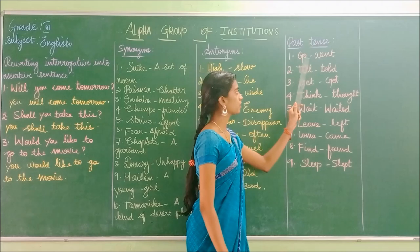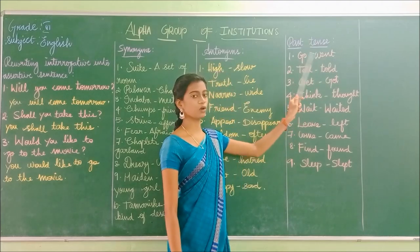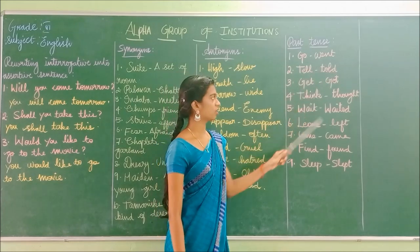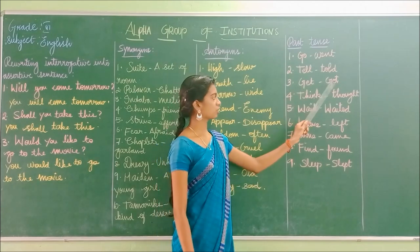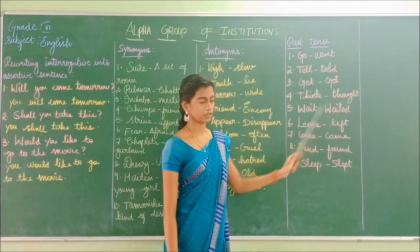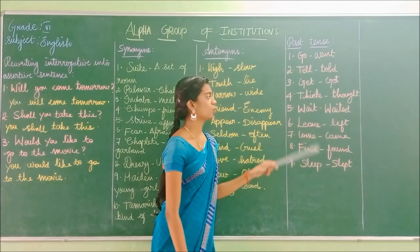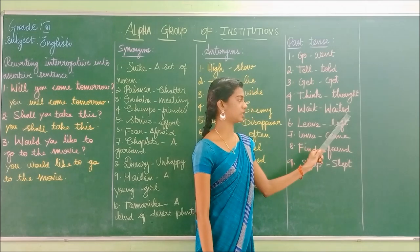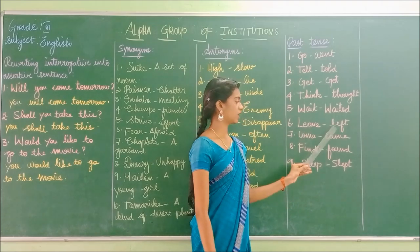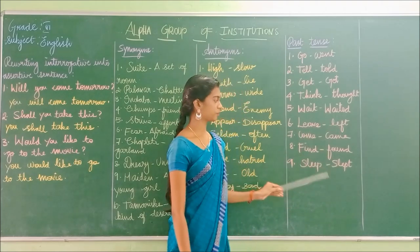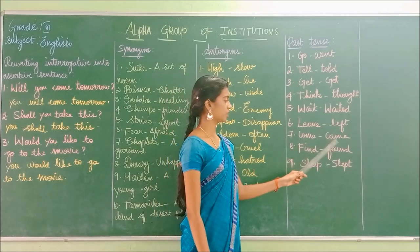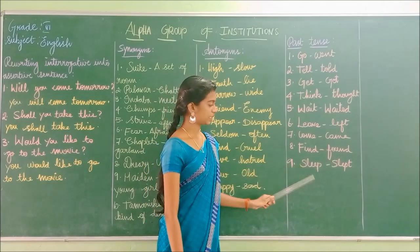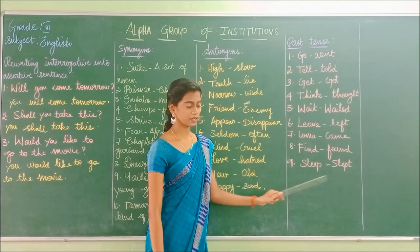Past tense forms: Go — went. Tell — told. Get — got. Think — thought. Wait — waited. Leave — left. Come — came. Find — found. Sleep — slept.